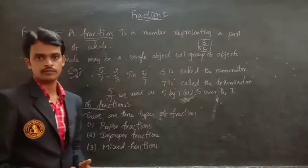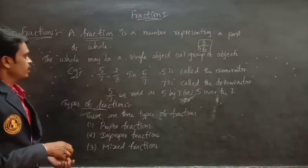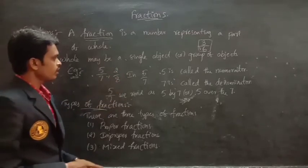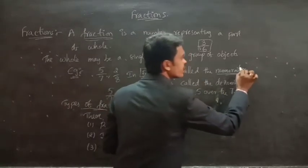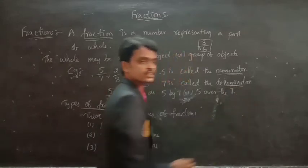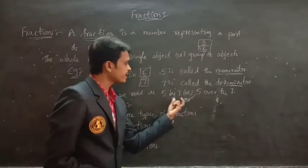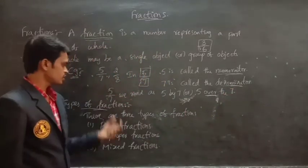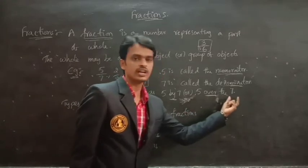The fraction is written as — for example — five by seven and two by eight. In five by seven, this five is called the numerator and this seven is called the denominator. This fraction is read as five by seven or five over seven.